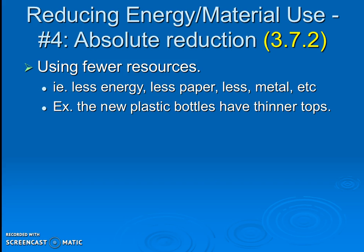Last but not least, just reduce your use in general — that's called absolute reduction. This means stop using as much stuff. It's a great idea but hard to picture in practice. Just use less energy: turn off the lights instead of just switching to better light bulbs. Use less paper — that's a tough one for students and teachers unless we have more computers. Use less metal. Just use less overall. As we move into our pollution unit we'll brainstorm solutions, because otherwise we're going to have a big problem with our carrying capacity and how we're depleting resources.